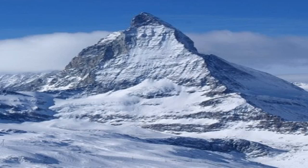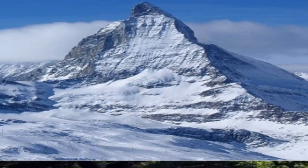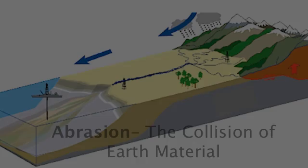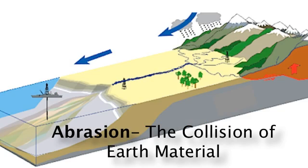Ice wedging will be really important when we talk about glaciers. Notice in this picture how pointed and jagged that mountain looks — that formed because of ice wedging. And in the bottom picture, there's a big pothole in the middle of the road that also formed because of ice wedging. So just because we don't live near glaciers doesn't mean we're not affected by ice wedging.